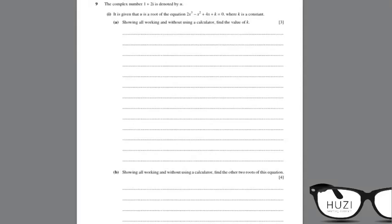Question number 9. The complex number 1 plus 2i is denoted by u. It is given that u is a root of 2x cubed minus x squared plus 4x plus k equals 0, where k is a constant. Showing all working and without using a calculator, find the value of k.